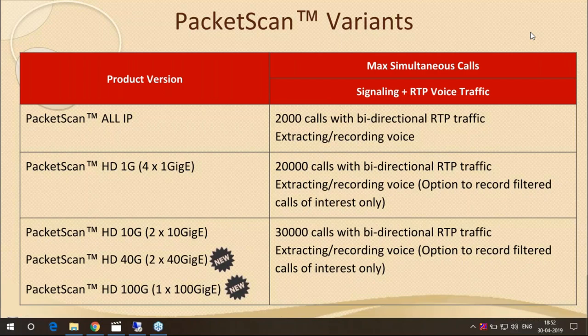Here's a summary of PacketScan variants. Even the software-only solution — PacketScan All-IP — can monitor a very large density of traffic: 2,000 calls of bi-directional RTP traffic, with simultaneous voice extraction and recording. This is a relatively low-cost product that can be deployed at multiple locations monitoring all-IP traffic, including SIP, H.323, MGCP, Megaco, and other protocol variants.